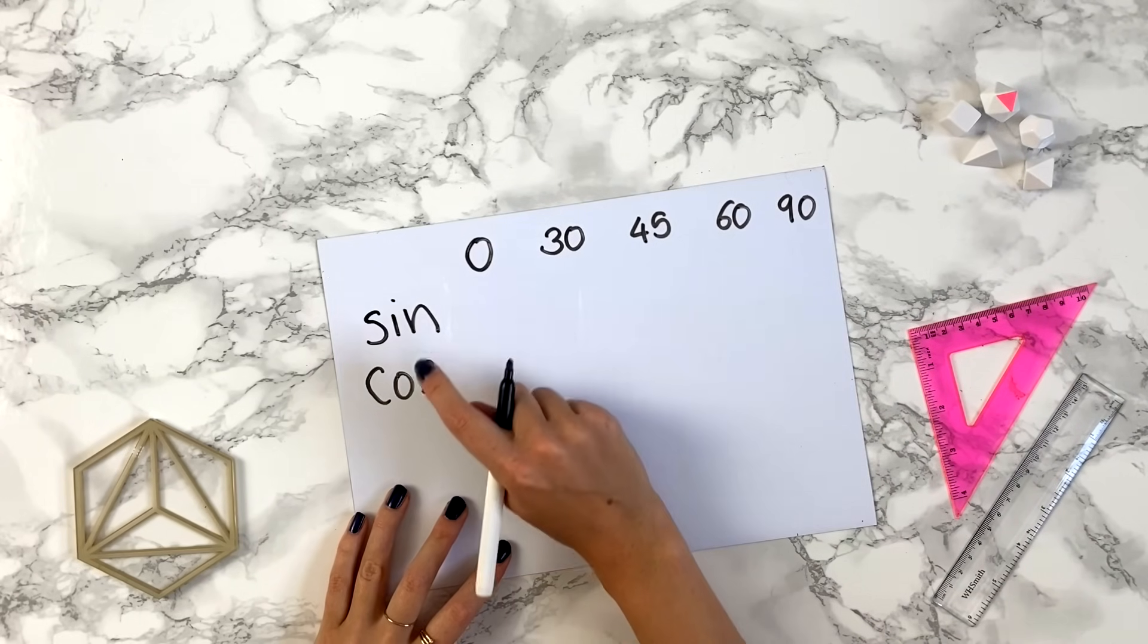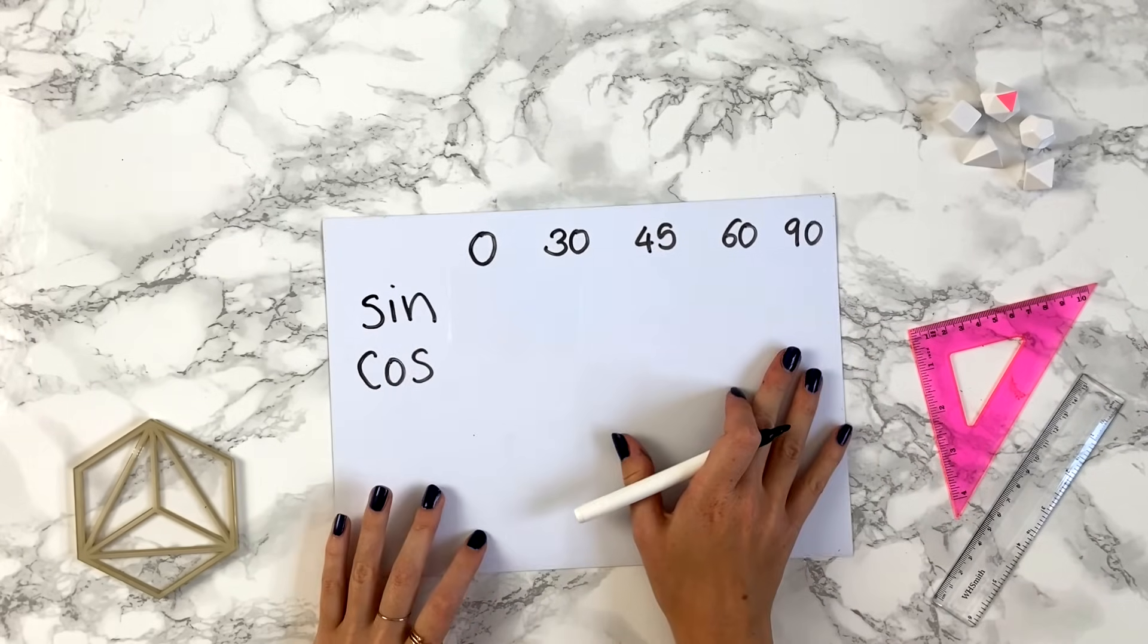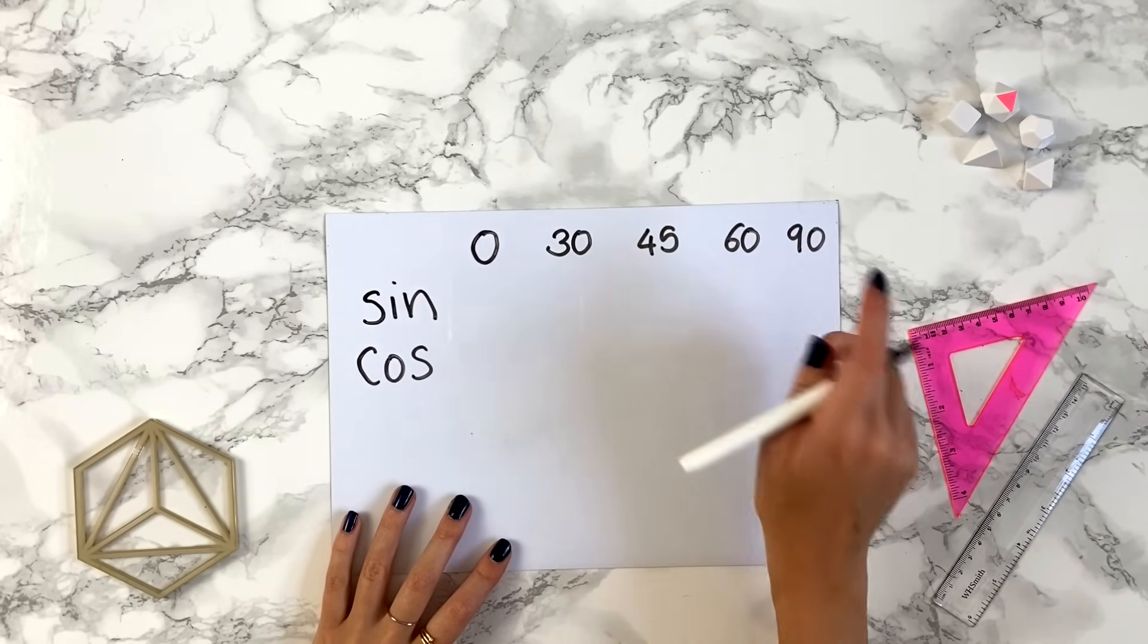These are key sine and cos values that you sometimes need to remember, so like sine 30 equals 45 and so on. So you have 0, 30, 45, 60, 90.